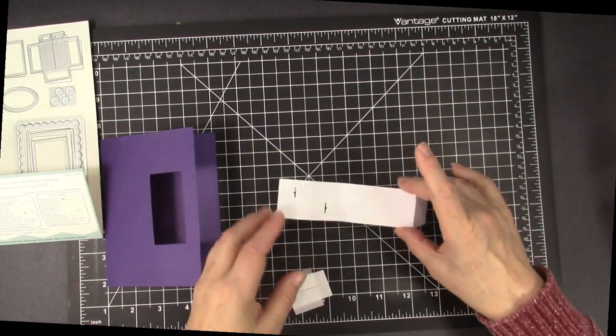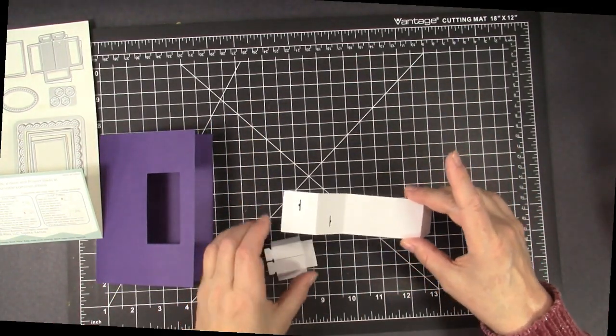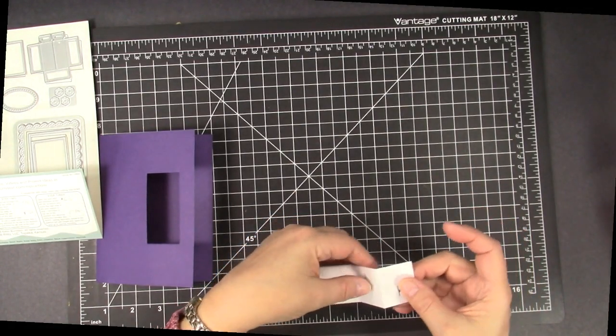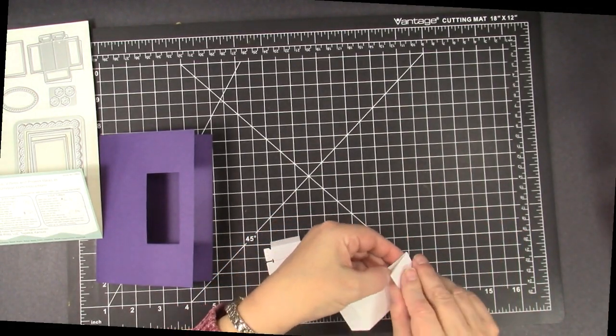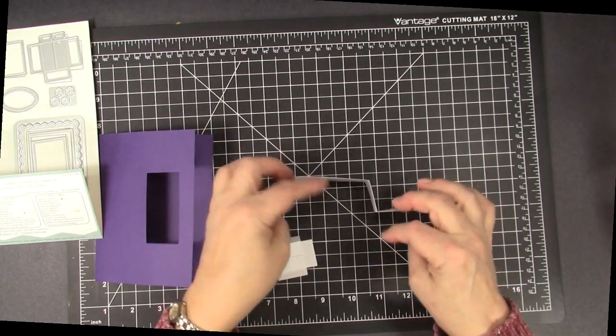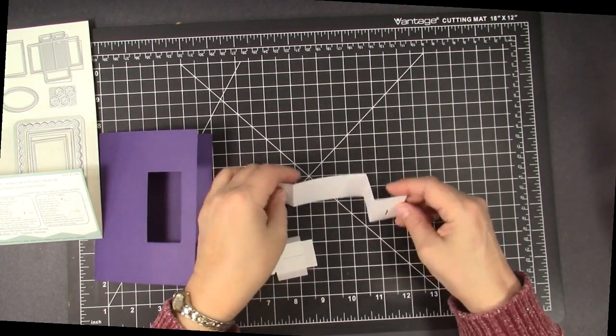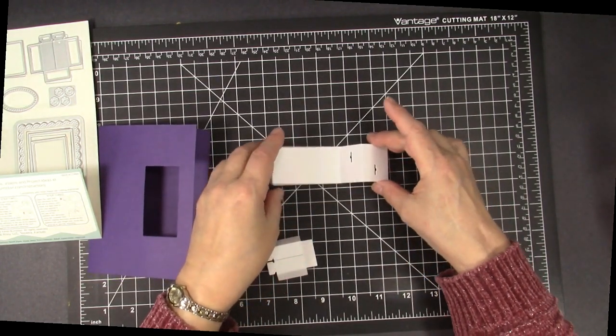So you have this piece, which is the longer piece, and you're going to fold it in a mountain valley mountain. So it's kind of like a, well, it looks like that when it's done. Okay, mountain valley mountain.